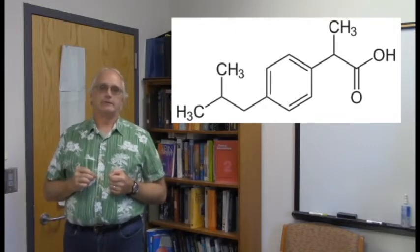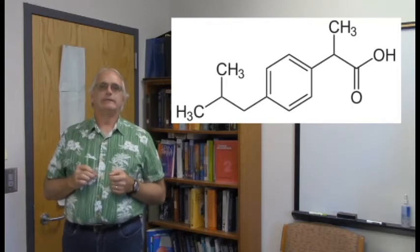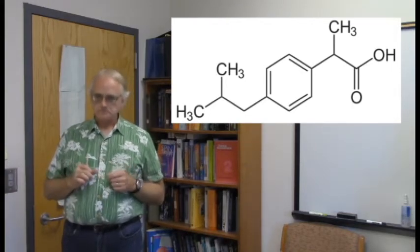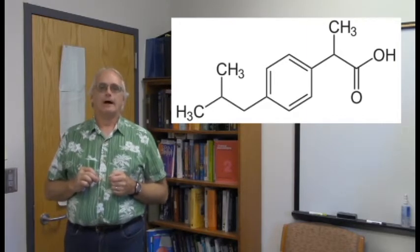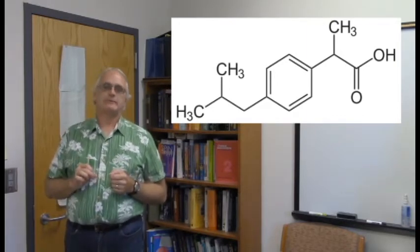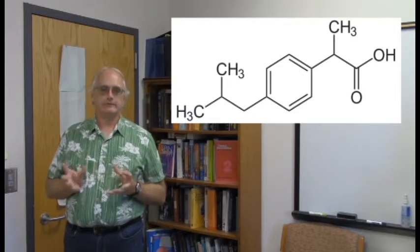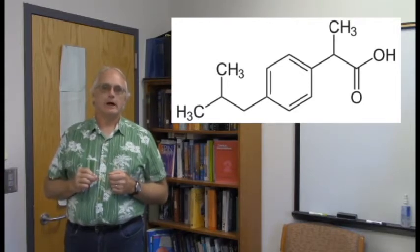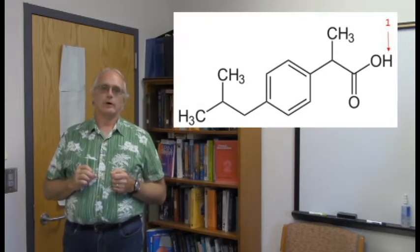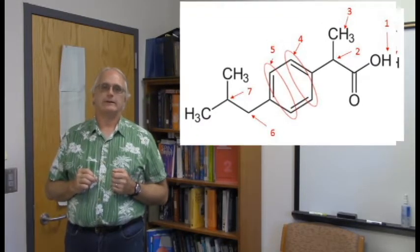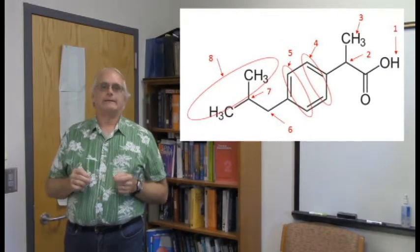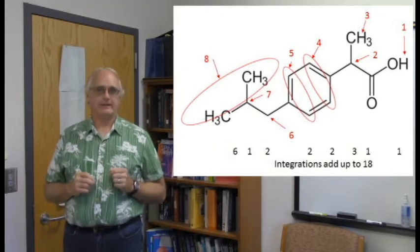you can look fairly readily at the structure of ibuprofen and note that it has 18 total protons in there, and they should come in eight different groups. There are eight distinct groups of protons in there. There's just enough symmetry to be interesting but not be too terribly symmetric here. These are the eight groups: one, two, three, four, five, six, seven, eight, and the integrations, which indeed adds up to 18.